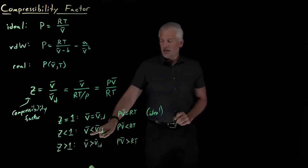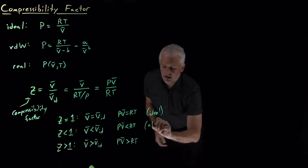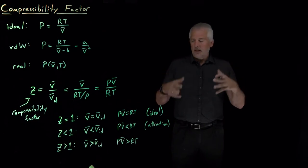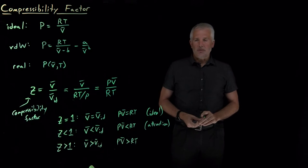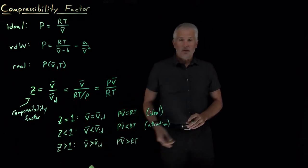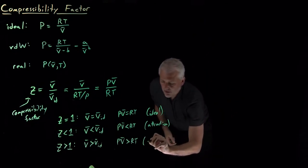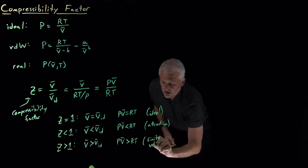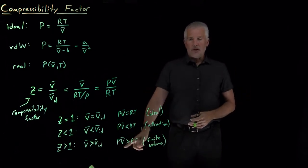The first case, where volume is smaller than the ideal gas volume, happens when the most important deviation from the ideal gas law is the attraction between molecules. The molecules attract, occupy a smaller volume, and the PV product is smaller than expected. When volume is bigger than what the ideal gas law says, it's because the deviations are driven by the finite volume of the molecules, making them take up more space.